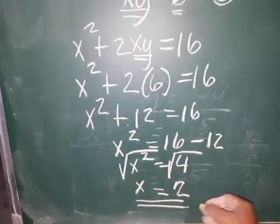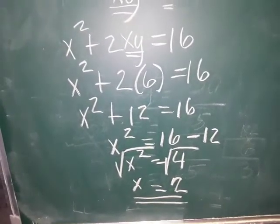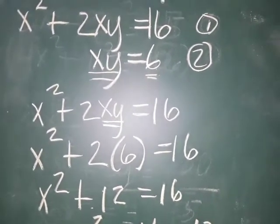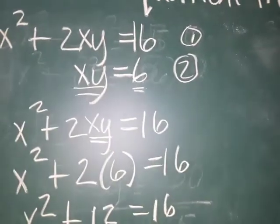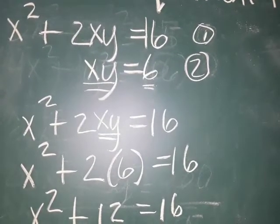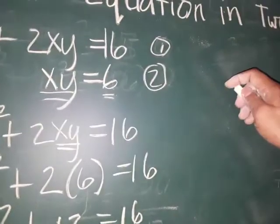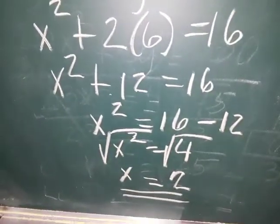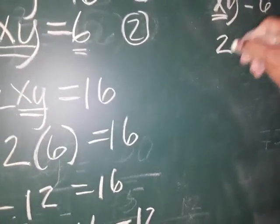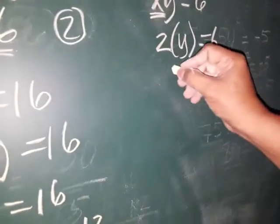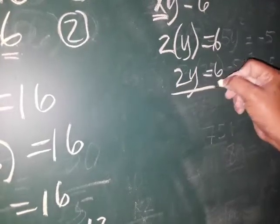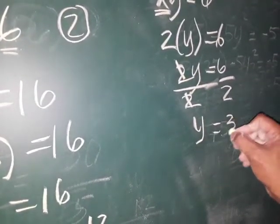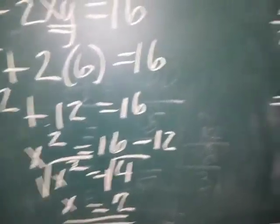If we already have the value of x, let's get the value of y. We can use equation 2 or equation 1. Using equation 2: xy is equal to 6, our x is 2, so replace x with 2. Then 2y is equal to 6, divide both sides by 2 — cancel. So y is equal to 6 divided by 2, which is 3. So our x is 2 and y is equal to 3.